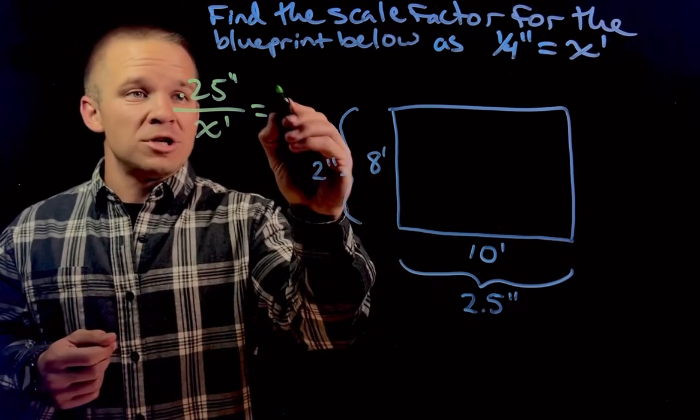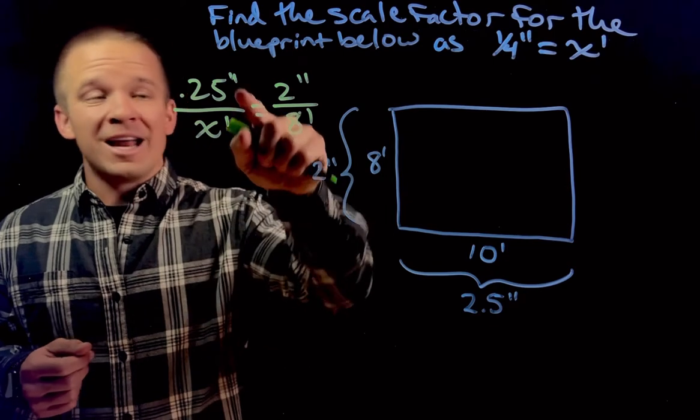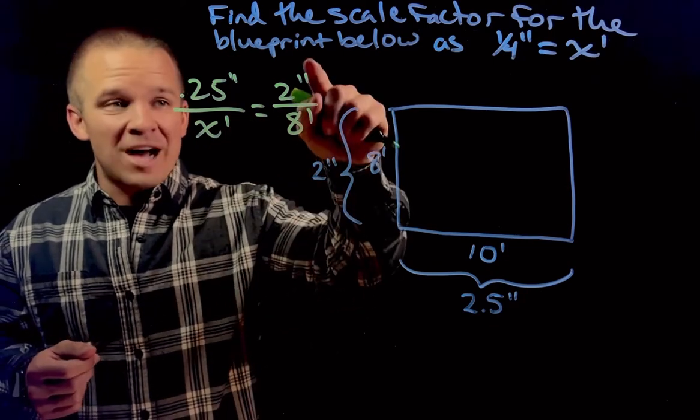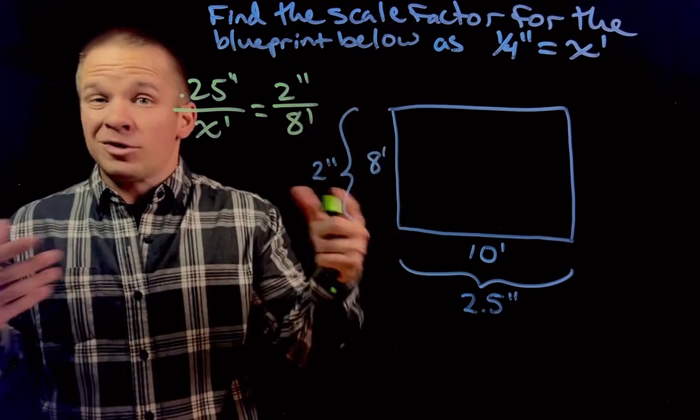So I've got 2 inches. I gotta go inches over feet. So I've got scale factor and then I've got blueprint to real life. Now I can just cross multiply and solve.